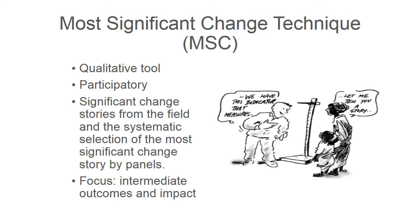The most significant change technique is a qualitative and very participatory tool that aims to look at significant change stories from the field and involves a systematic selection of the most significant change story by panels. Its added value is that it allows all stakeholders — everyone involved in the process — to look at the level of impact. It is an exercise that brings everybody to think about the overall goal of the program, which in the case of the Learning to Live Together program is to equip children to make ethical decisions, increase their capacity to nurture their spirituality, and develop their capacity to work together with others to transform their communities.